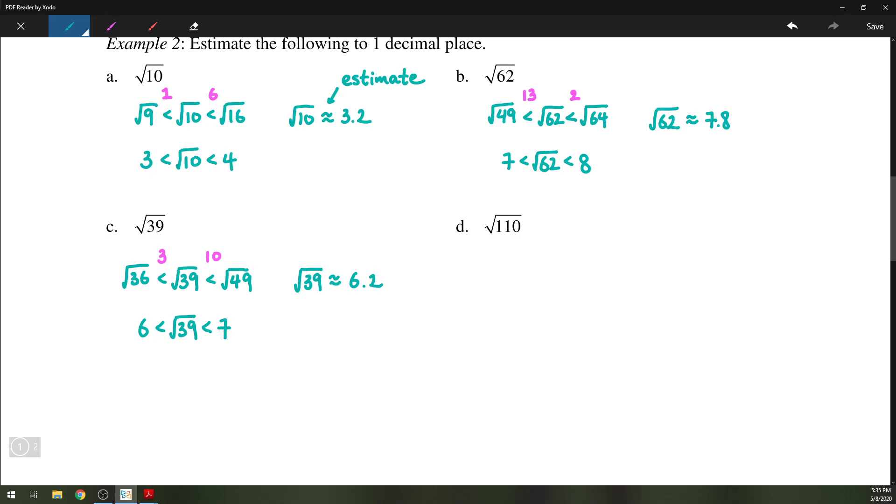Finally, last one here, we have 110. The closest perfect squares are 100 and 121, which places the square root of 110 somewhere between 10 and 11. So it's 10 away from 100 and 11 away from 121. The square root is probably somewhere in the middle. A reasonable estimate would be that the square root of 110 is 10.5.